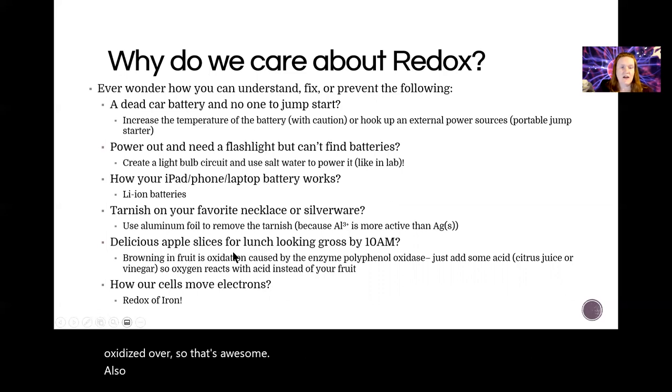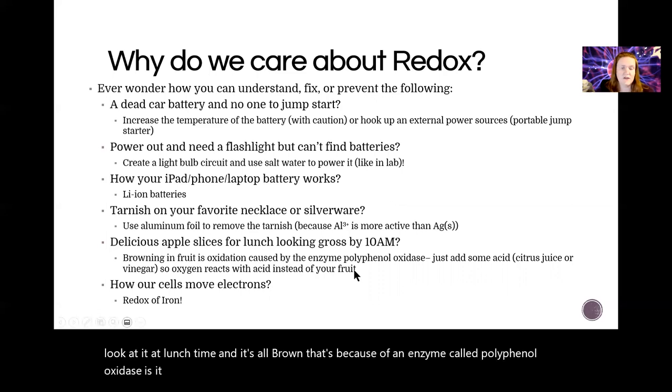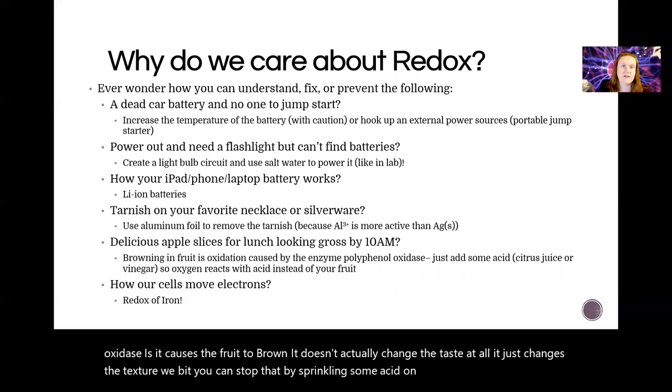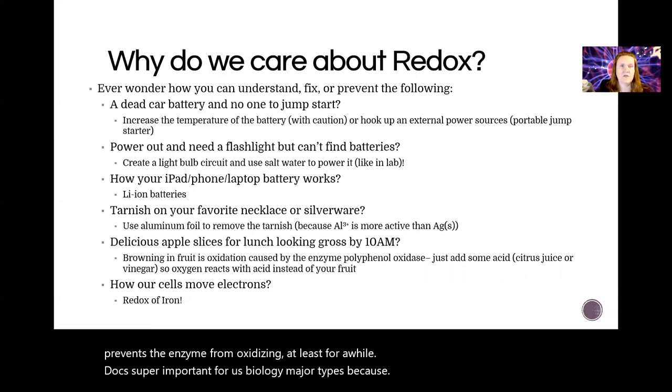Also, who likes yucky apple slices, right? So if you slice your apple in the morning and then you look at it at lunchtime and it's all brown, that's because of an enzyme called polyphenol oxidase. It causes the fruit to brown. It doesn't actually change the taste at all. It just changes the texture a wee bit. You can stop that by sprinkling some acid on your apples, which prevents the enzyme from oxidizing at least for a while. Also, redox super important for us biology major types because everything in the human body is a redox process. Breathing, metabolism, photosynthesis, everything.